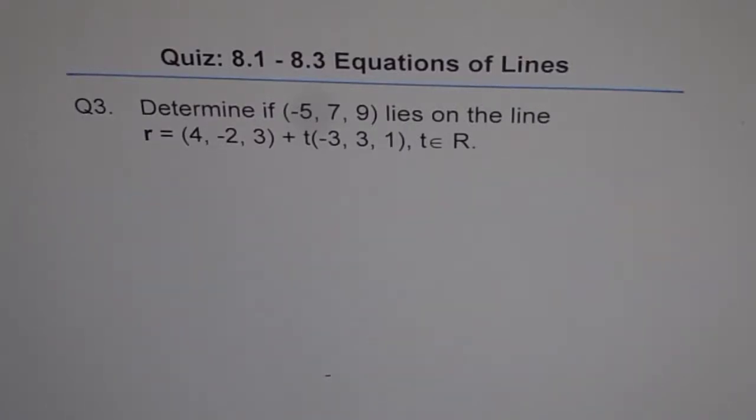Quiz on equations of lines. Question 3. Determine if (-5, 7, 9) lies on the line r = (4, -2, 3) + t(-3, 3, 1), where t belongs to real numbers.